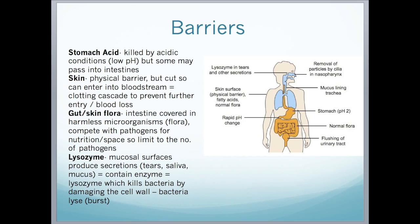Skin is the biggest organ in the human body and creates a physical barrier, but if there is a cut, pathogens can enter the body and bloodstream. The body tries to avoid this by creating a clotting cascade, which prevents further entry and blood loss. We also have lysozymes, an enzyme found in mucosal surfaces such as tears, saliva, and mucus, which kills bacteria by damaging the cell wall, causing the bacteria to burst.